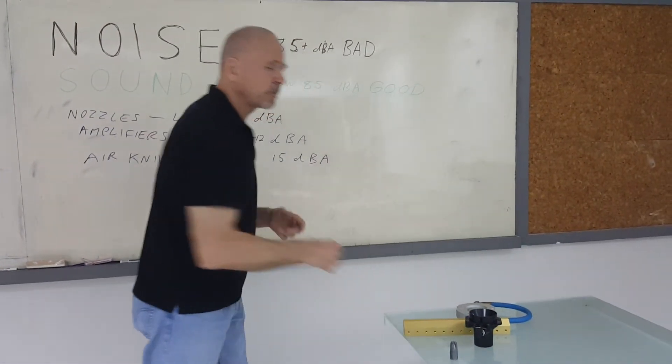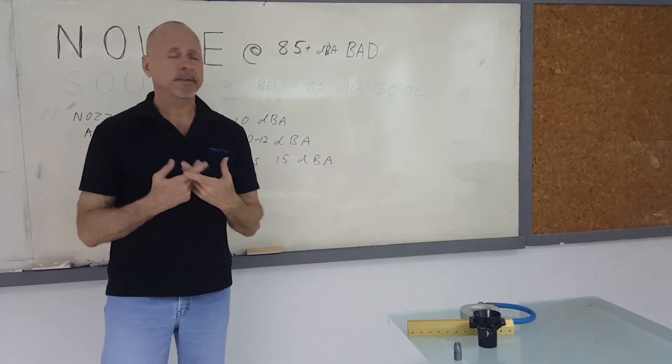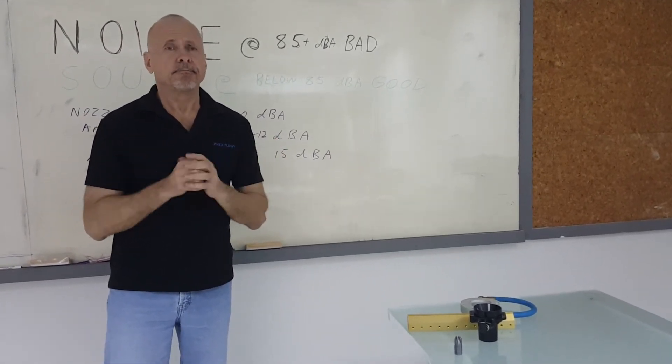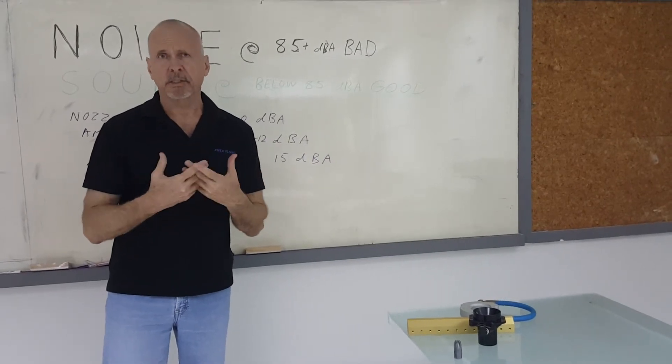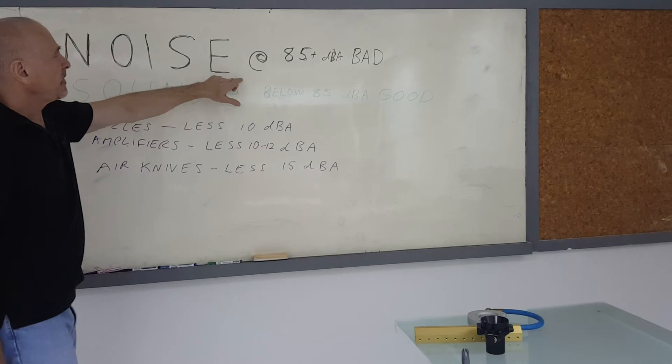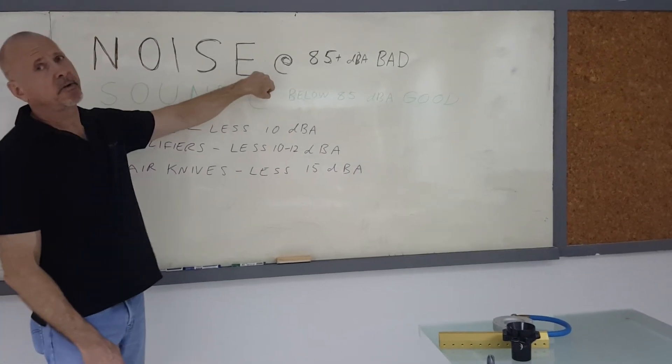So always remember, an air amplifier can reduce noise 10 to 15 decibels. It can reduce the exhaust noise coming from a compressed air line. Noise at 85 decibels or more is very, very bad.